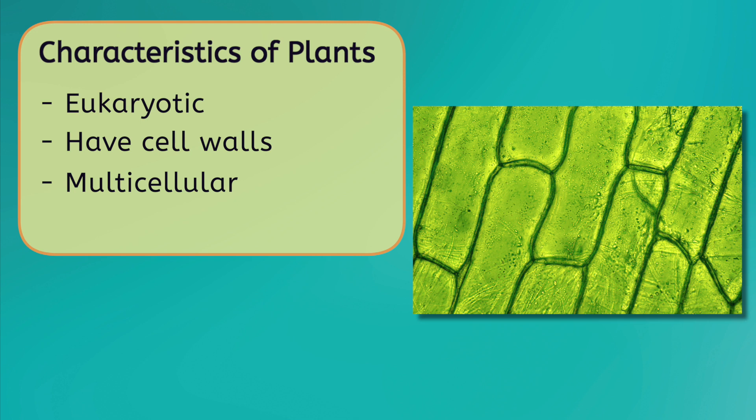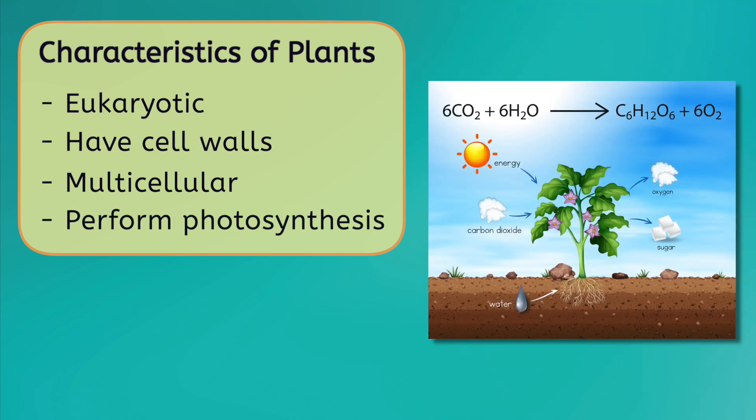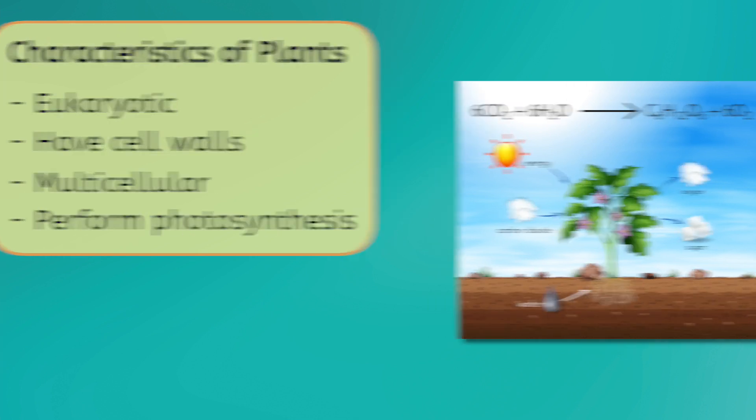And finally, all plants perform photosynthesis, which is a series of reactions occurring in the presence of sunlight that creates sugar. With these four characteristics, we can easily tell the plant fakers from the real plants.